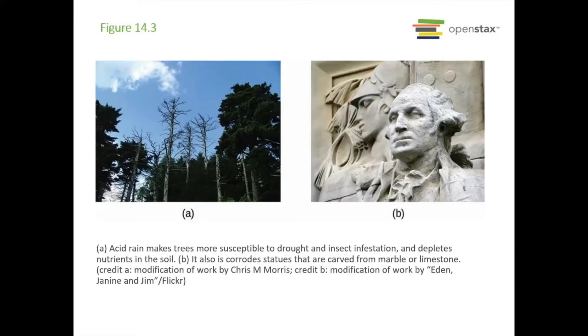This figure here just kind of shows some things that are affected by acid-based reactions. Something like acid rain could affect trees, making them more susceptible to drought and insect infestations. And it also is going to deplete nutrients in the soil. And it can corrode statues that are made of marble or limestone.